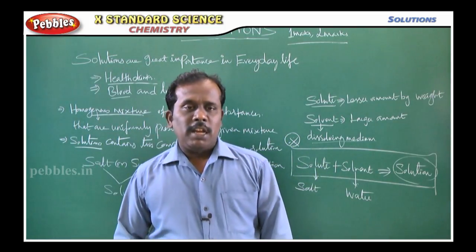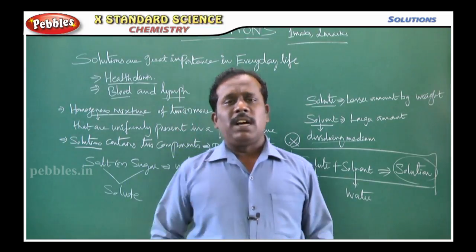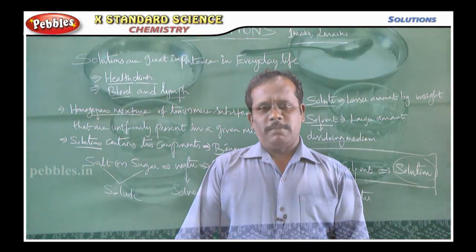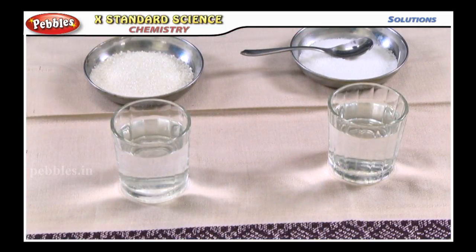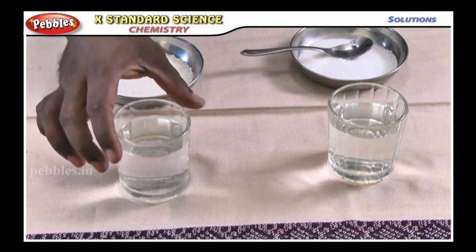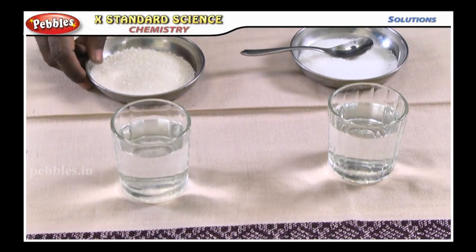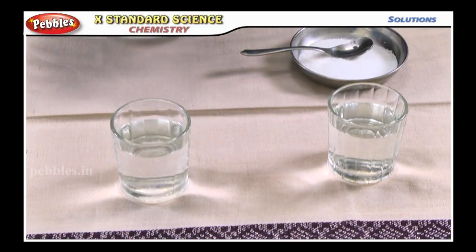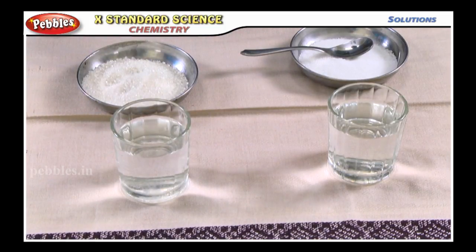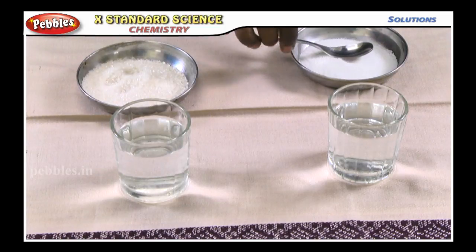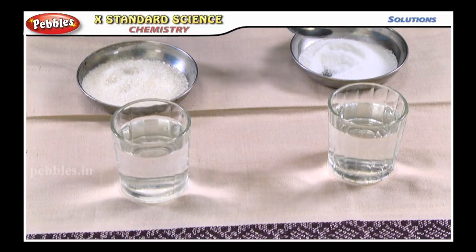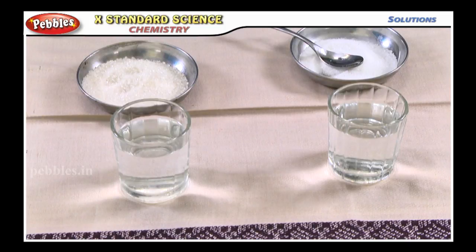Now I am going to demonstrate how the solute mixes with the dispersion medium, water, and forms a solution. Students, I am going to explain what is solvent and what is solute. This is water — water is the solvent. In front of the water I have kept a solute. This is sugar — sugar is considered the solute. I also have salt — salt is also a solute. Now I am going to show the solute mixed with the solvent to form a solution.